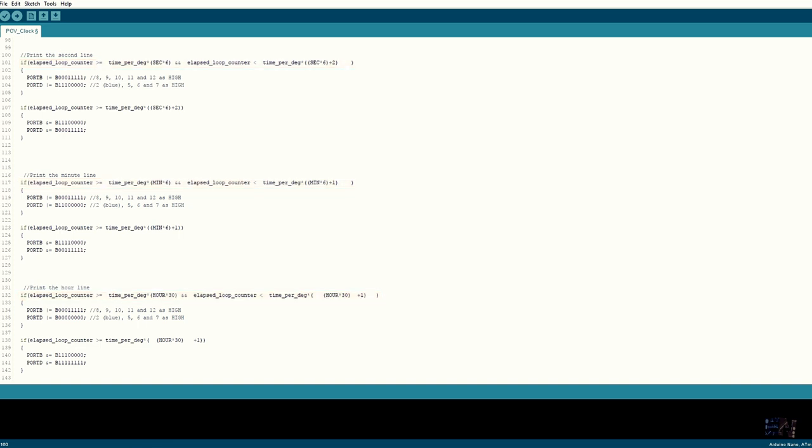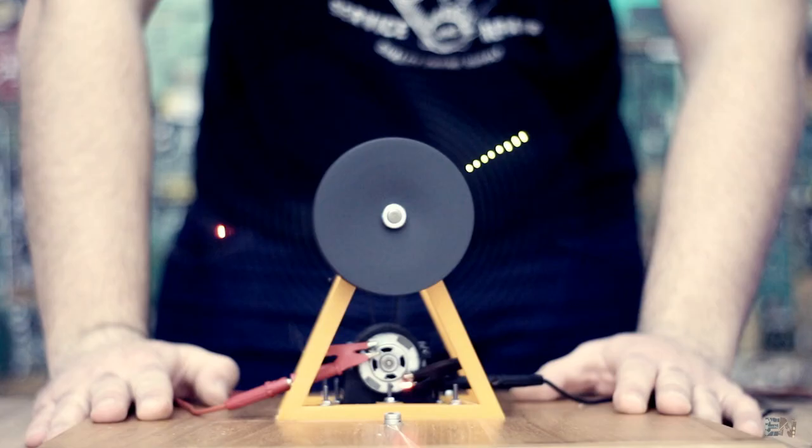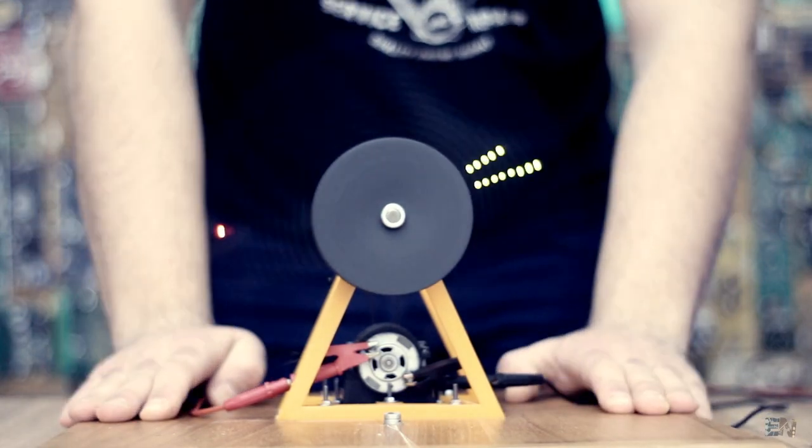That's it, you've got your POV clock. And by the way, this is not real time, since the clock will reset each time you turn off the Arduino. If you want real time, just start the Arduino at exactly 12 o'clock and you're good to go.